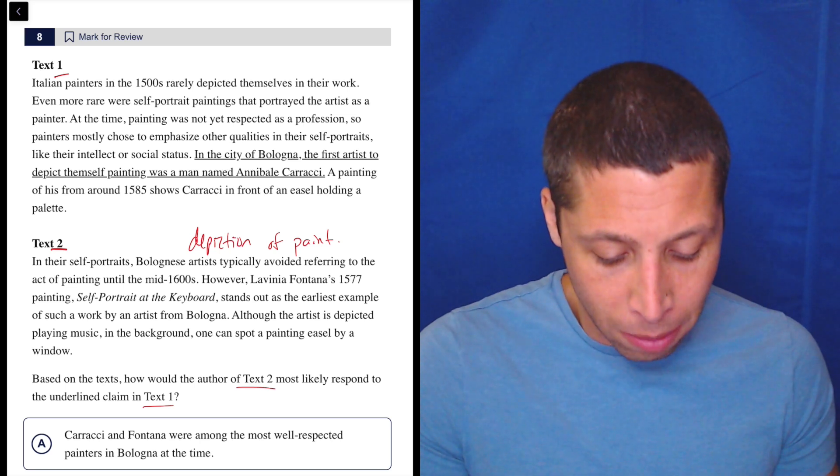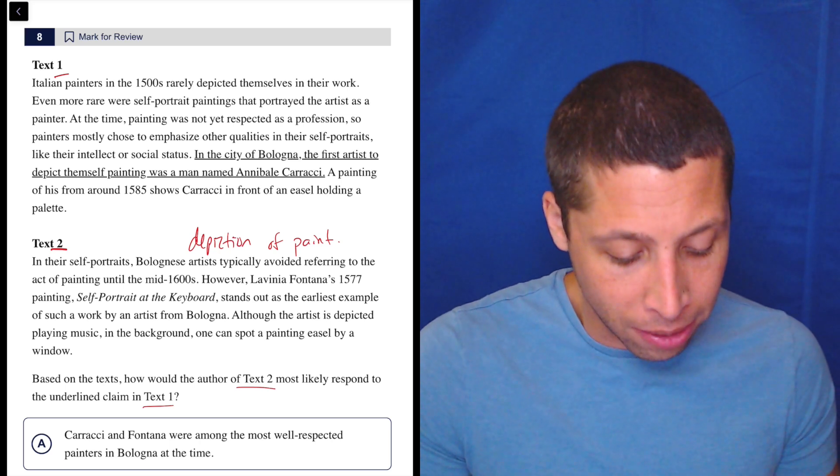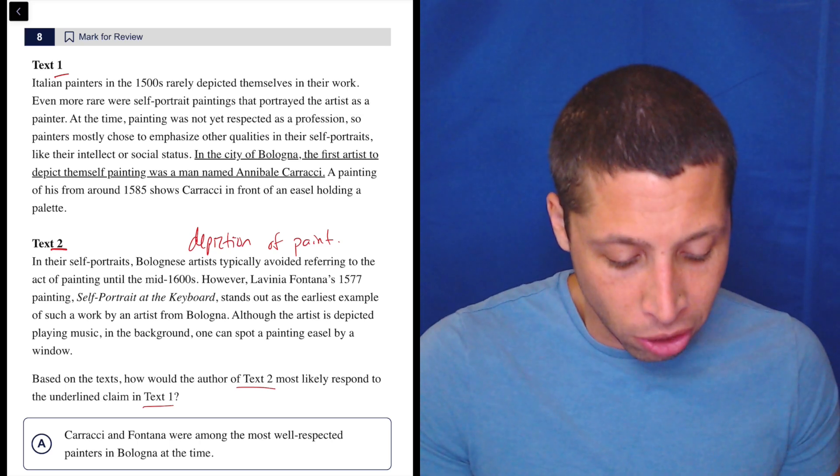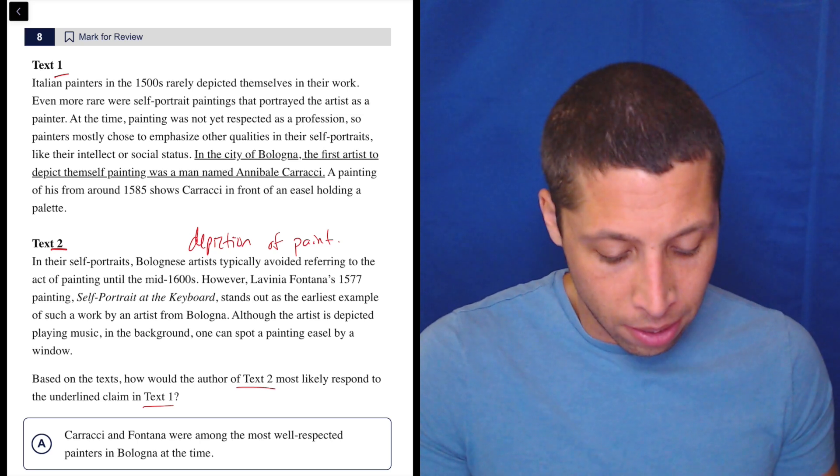In the city of Bologna, the first artist to depict themselves painting was a man named Anibal Karachi. A painting of his from around 1585 shows Karachi in front of an easel holding a pallet. Well, okay, now I get it.